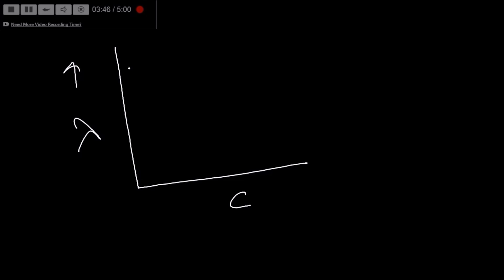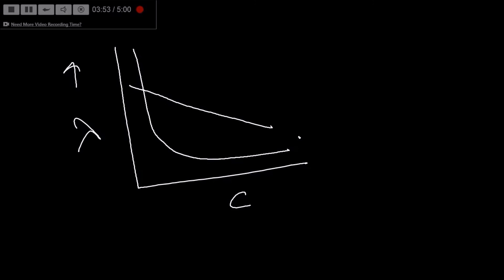For a strong electrolyte the decrease is sharp, while for a weak electrolyte — such as CH₃COOH — it is a steeper curve, compared to a strong electrolyte like KCl.